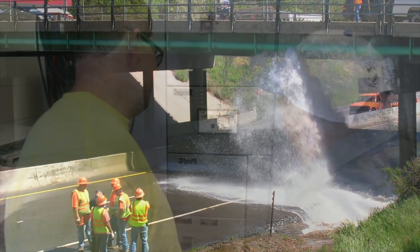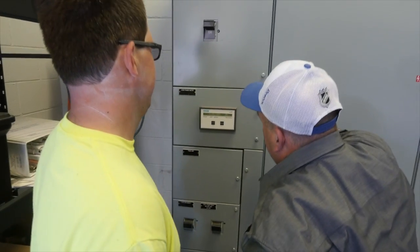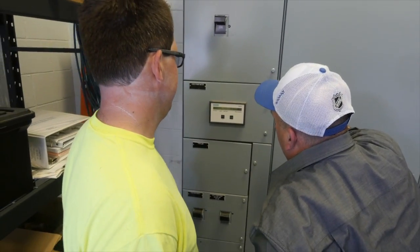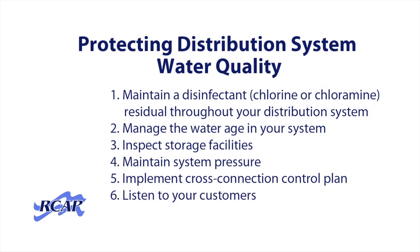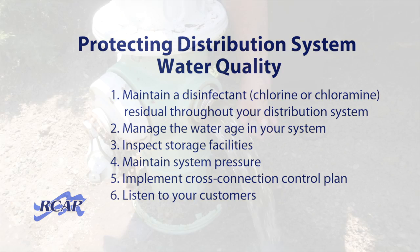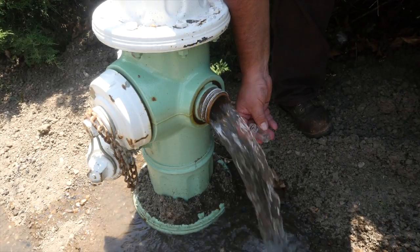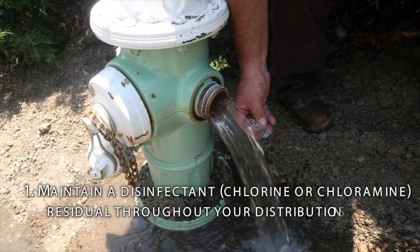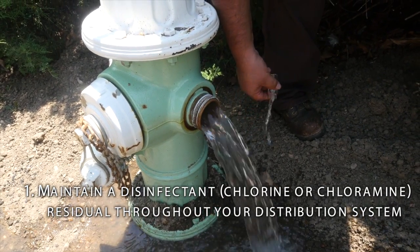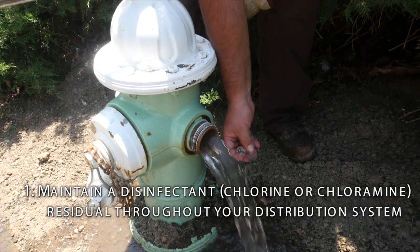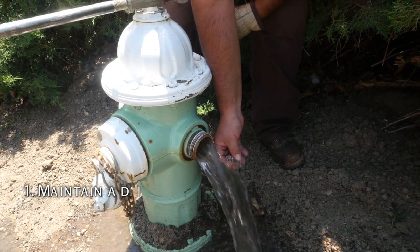So, as an operator, what should you do? This video will discuss six items for you to consider to protect water quality in the distribution system. One of the first tasks is to ensure that you are maintaining a disinfectant residual — chlorine or chloramines — throughout your distribution system.